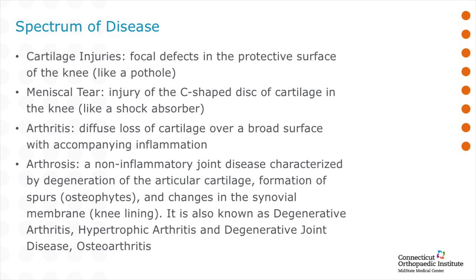Adjacent to the cartilage in your knee is another structure called your meniscus. These are C-shaped cartilage discs which act as shock absorbers. When these are torn, they cause pain, and we'll discuss these further. You often hear the term arthritis. Arthritis is really diffuse and broad loss of cartilage within your knee. It also accompanies inflammation, and this is what results in pain.